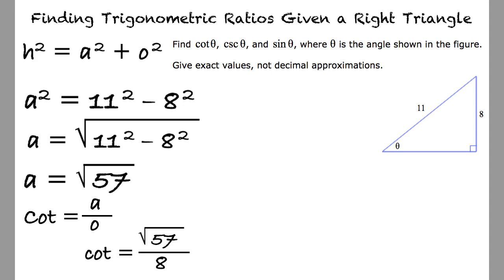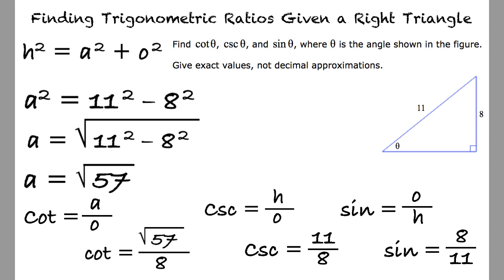Cosecant is the inverse of sine, thus hypotenuse over opposite, which equals 11 over 8. Sine is opposite over hypotenuse, which equals 8 elevenths.